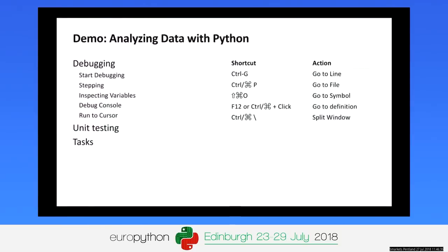Quick recap: we went through debugging — start debugging, stepping, inspecting variables, using the debug console, typing expressions, and using run-to-cursor. Keyboard shortcuts for jumping to files, symbols, and going to definition. Configuring unit testing and tasks within your workspace.